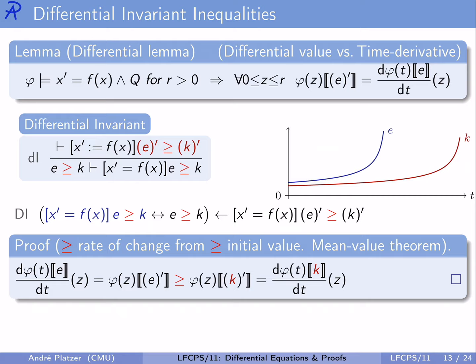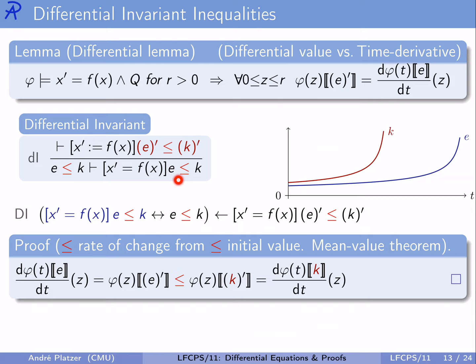For ≤: if E starts below K, it always stays below K if only its rate of change is below the rate of change of K. So if the differential of E is ≤ the differential of K always after following the differential equation, then the value of E is always ≤ the value of K if and only if it is true right now. For strictly greater than: we have to demand E > K in the beginning. But we can also get away with assuming E' ≥ K' — even if E just has the same rate of change as K, since it starts strictly above, it always stays strictly above K.